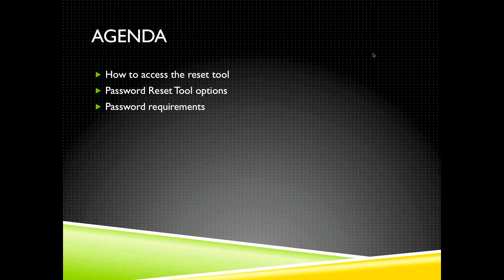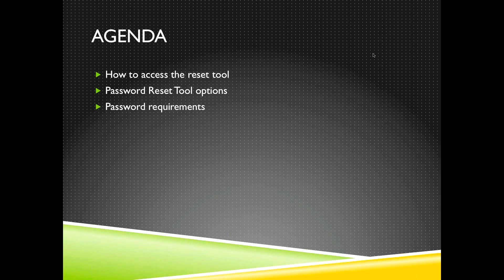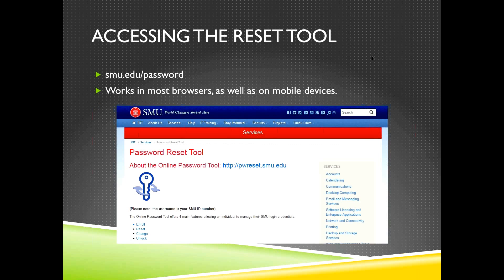Let's talk about how to access the reset tool. You can access the password reset tool from any browser on any computer — be it a Windows machine, a Mac, an iPad, Android tablet, or anything with an internet connection and a web browser. You'll want to access the tool by going to smu.edu/password, and you can even do this on your phone if you're out and about and need to change your password.